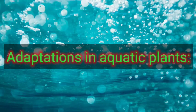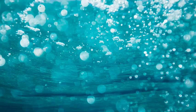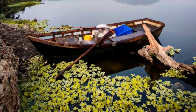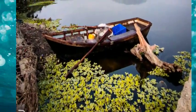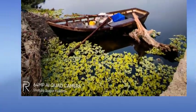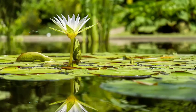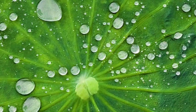Now let us learn adaptation in aquatic plants. Aquatic plants are those plants which grow in different water bodies like rivers, ponds, lakes, oceans, etc. You can see images of lotus, water lilies, and different aquatic plants in this video.